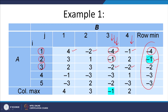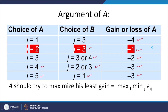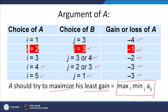So this is the argument of player A. A should try to maximize his least gain, which gives us the quantity max over i of min over j of A_ij. This entry is −1 because it is the maximum over all the row minimum entries — it is the max-min of A_ij.